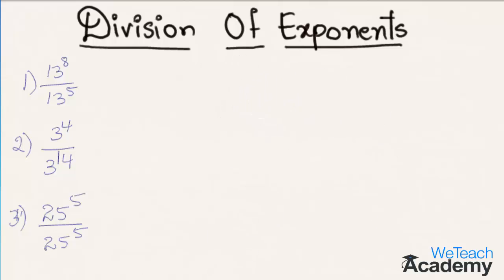Moving forward to the next example: 25 raised to the power 5 divided by 25 raised to the power 5, which is equal to 25 raised to the power 5 minus 5, which is nothing but 25 raised to the power 0.